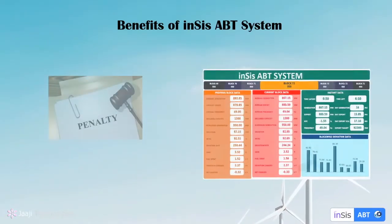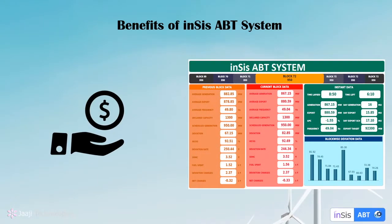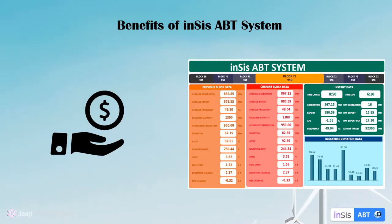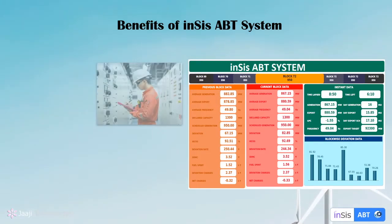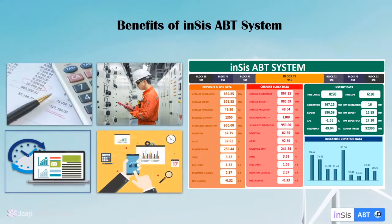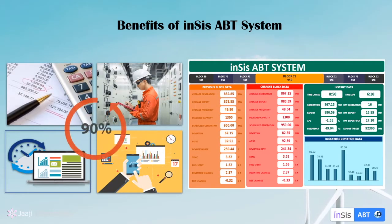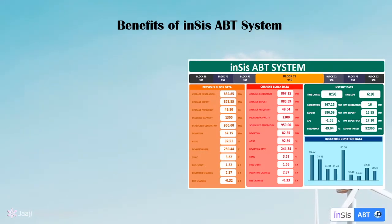INSYS's ABT system helps not only in avoiding penalties, but also in gaining incentives as per DSM regulations. It decreases man hours for data collection, calculations, and reporting by up to 90%. The payback period is typically 9 months for ABT systems.